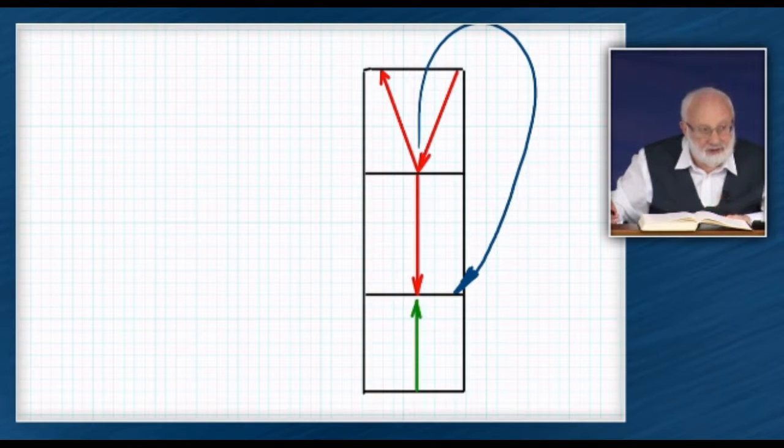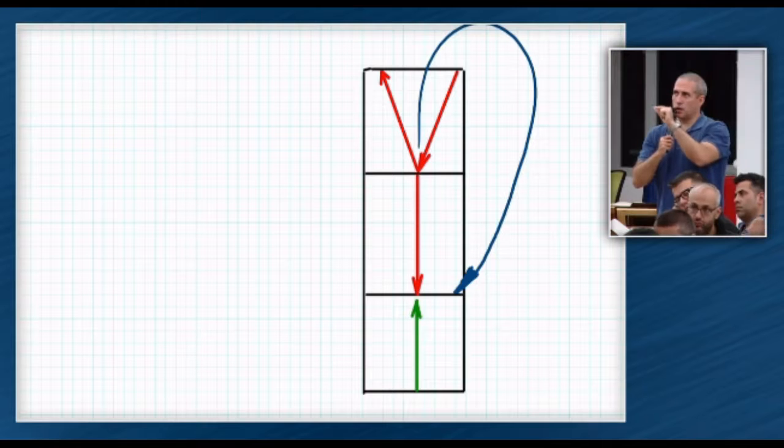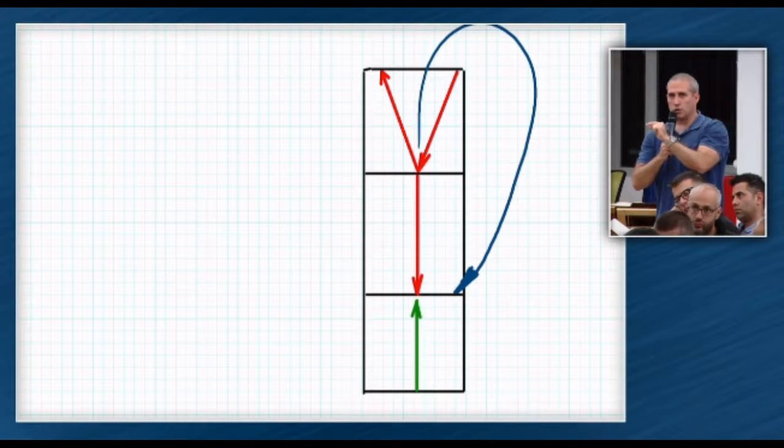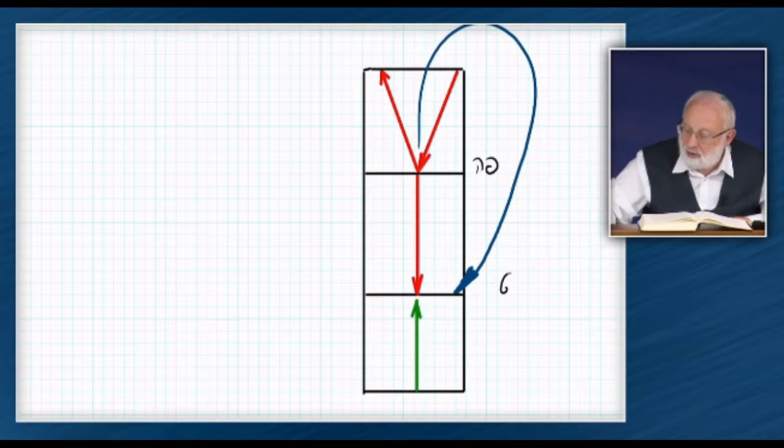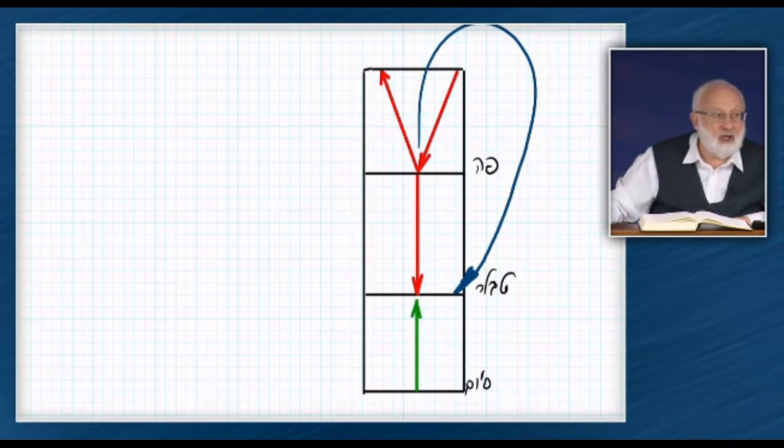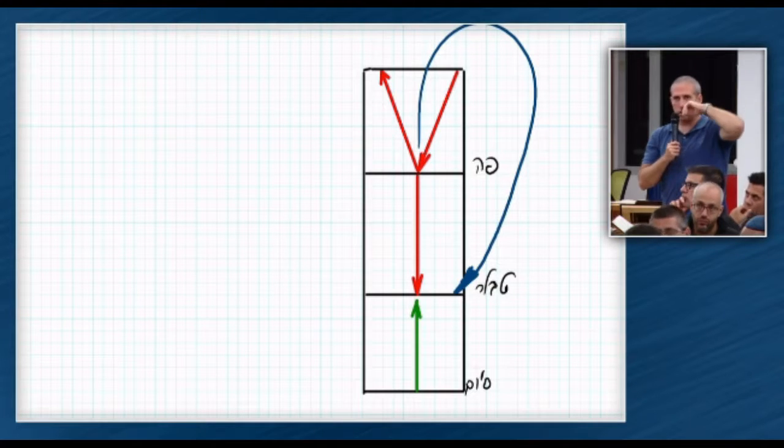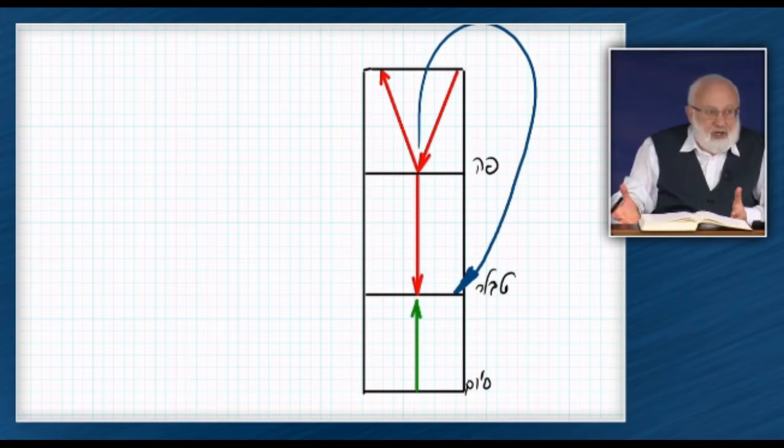So what do we have as a result? These two types of Roshimot, where are they in this drawing? There's still no Roshimot? When does the Roshimot happen? When the light departs. So it didn't happen yet.